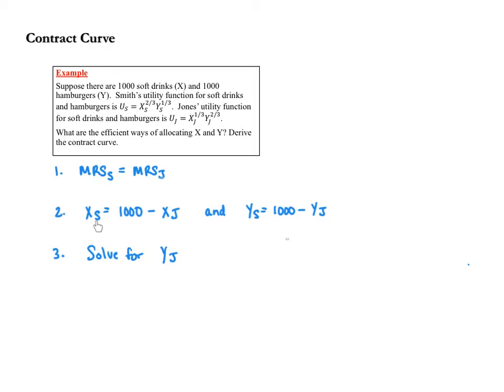Second, we recognize that there is a fixed amount of soft drinks and hamburgers in the society. Specifically, there are 1,000 units of X and 1,000 units of Y. So the amount of X that Smith has is 1,000 minus the amount of X that Jones has, and likewise, the amount of Y that Smith has is 1,000 minus the amount of Y that Jones has.